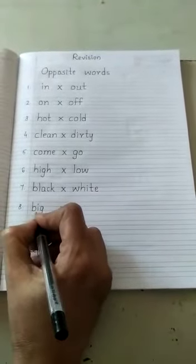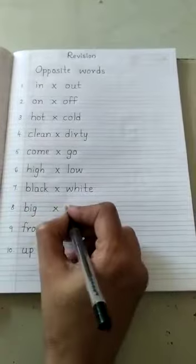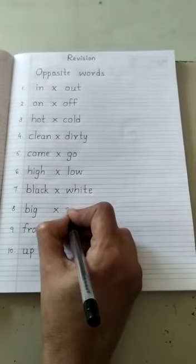Next one is Big. B I G. Big. Opposite word for big is Small.